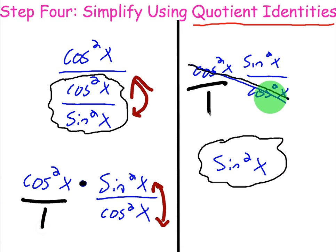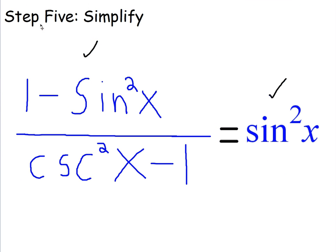And if they get crossed out, then we just have a sine squared on top and a one on bottom. So the final step is sine squared of x. So we've actually just proven now we get to step five in case we need to simplify something.